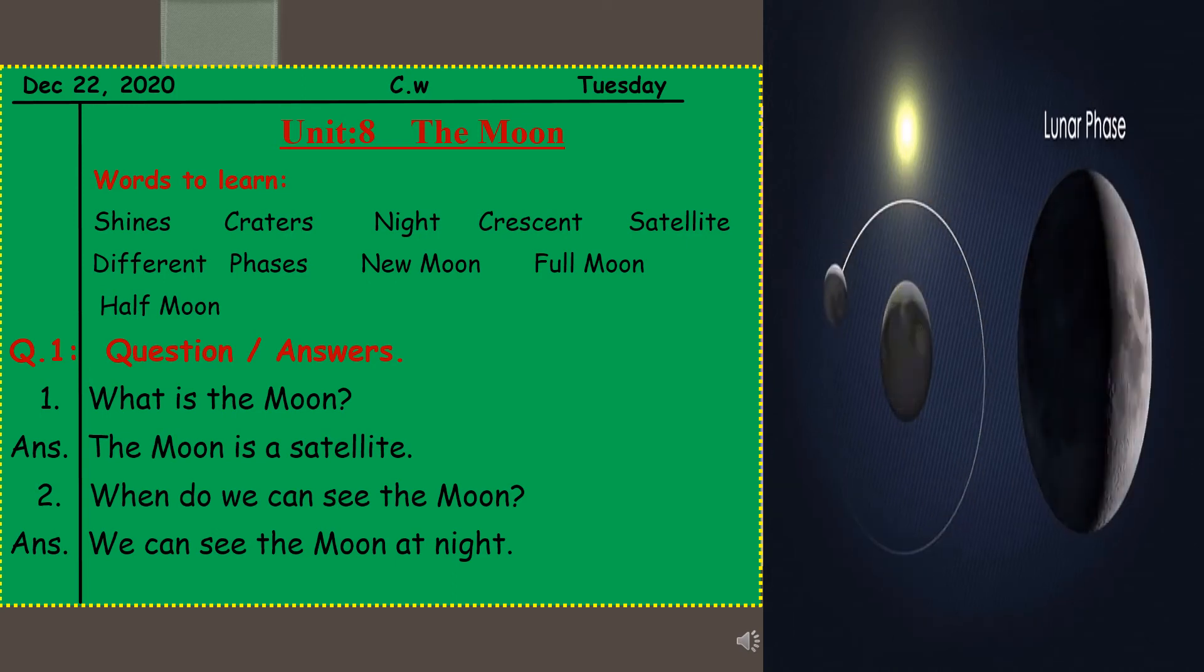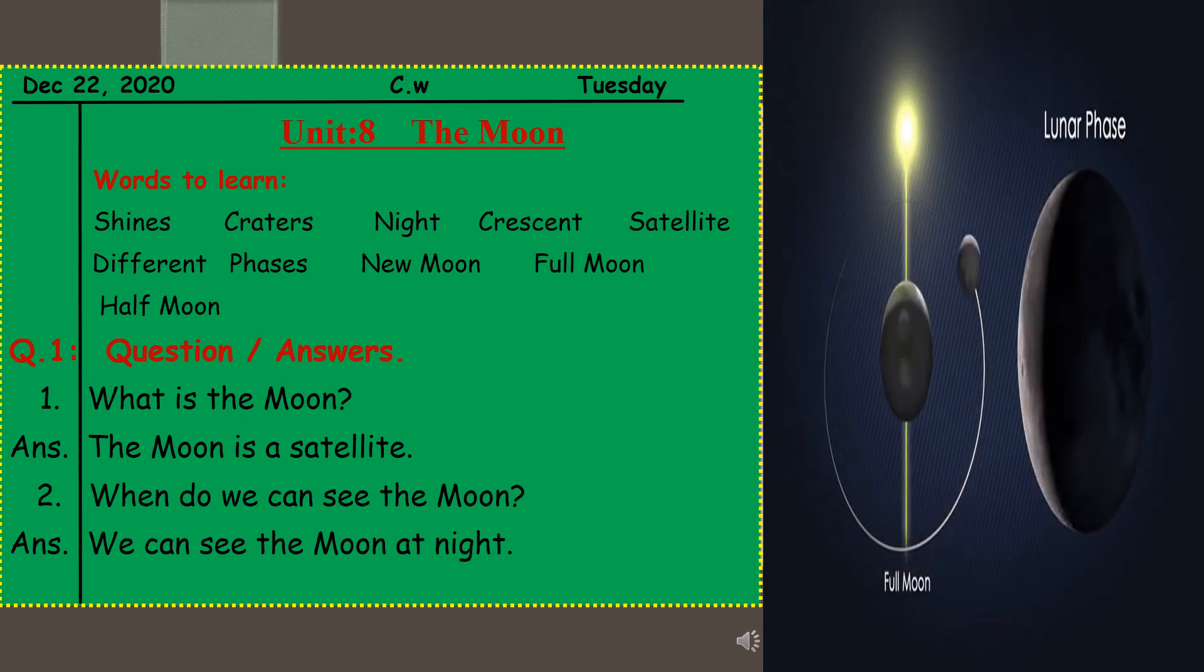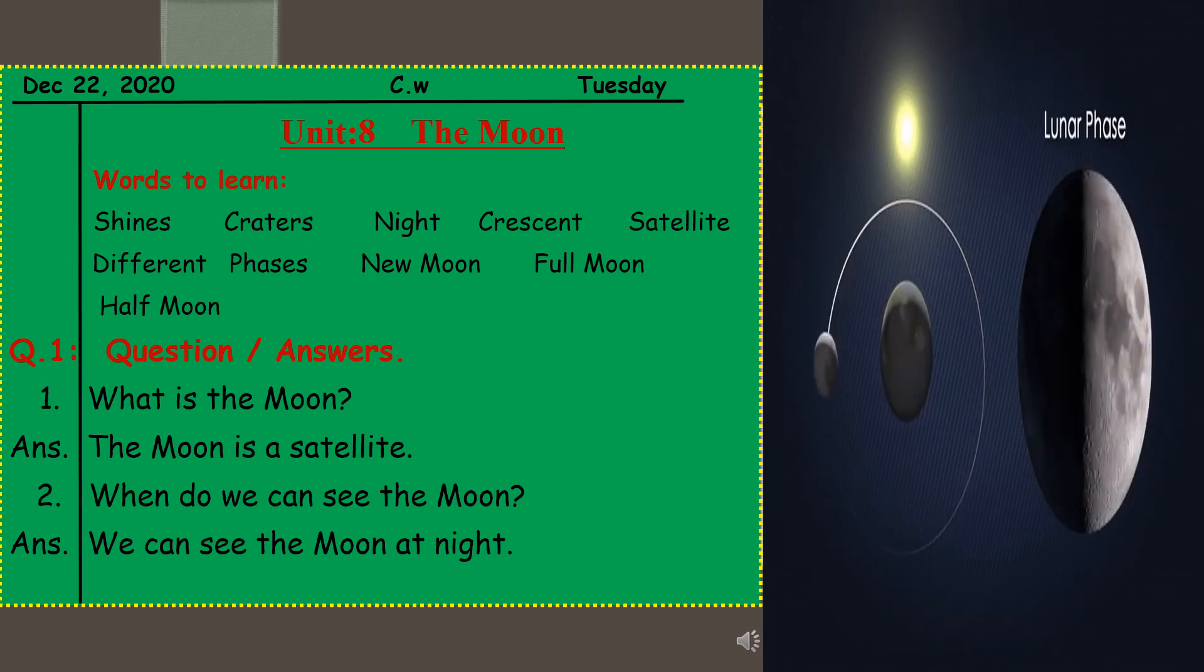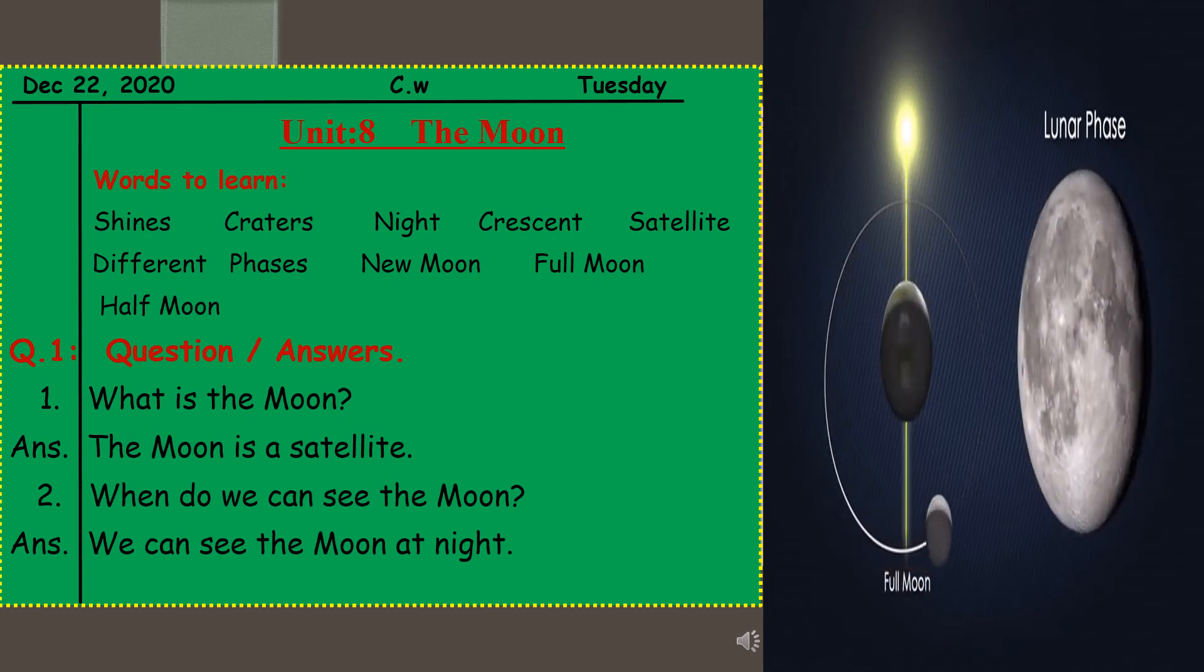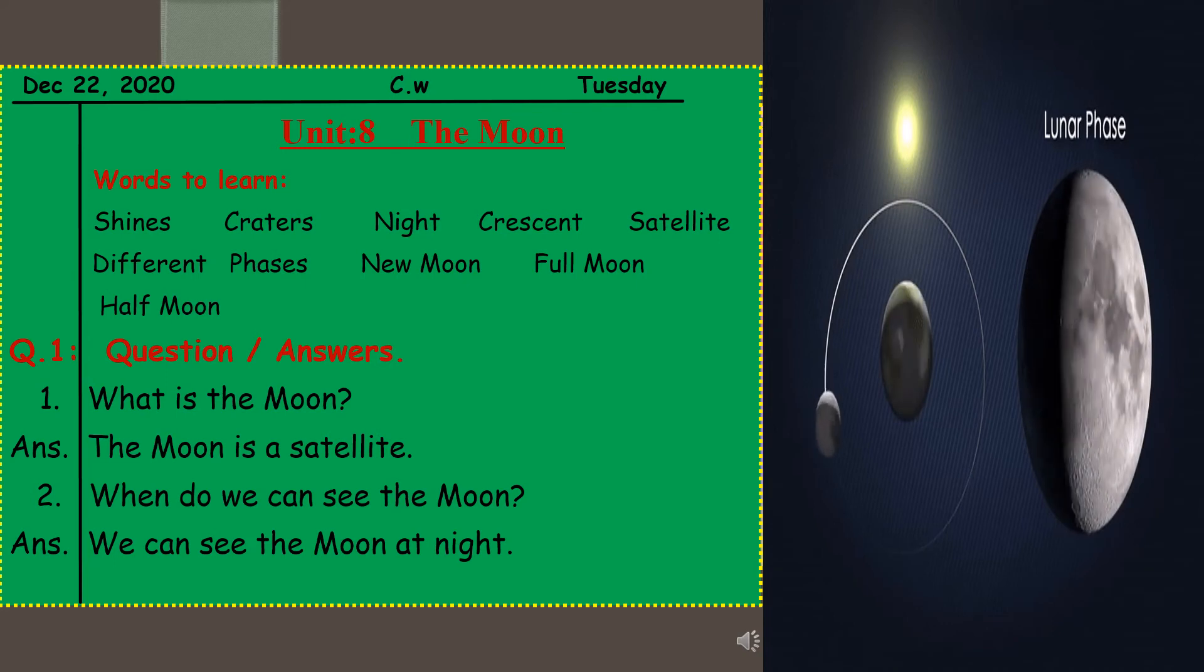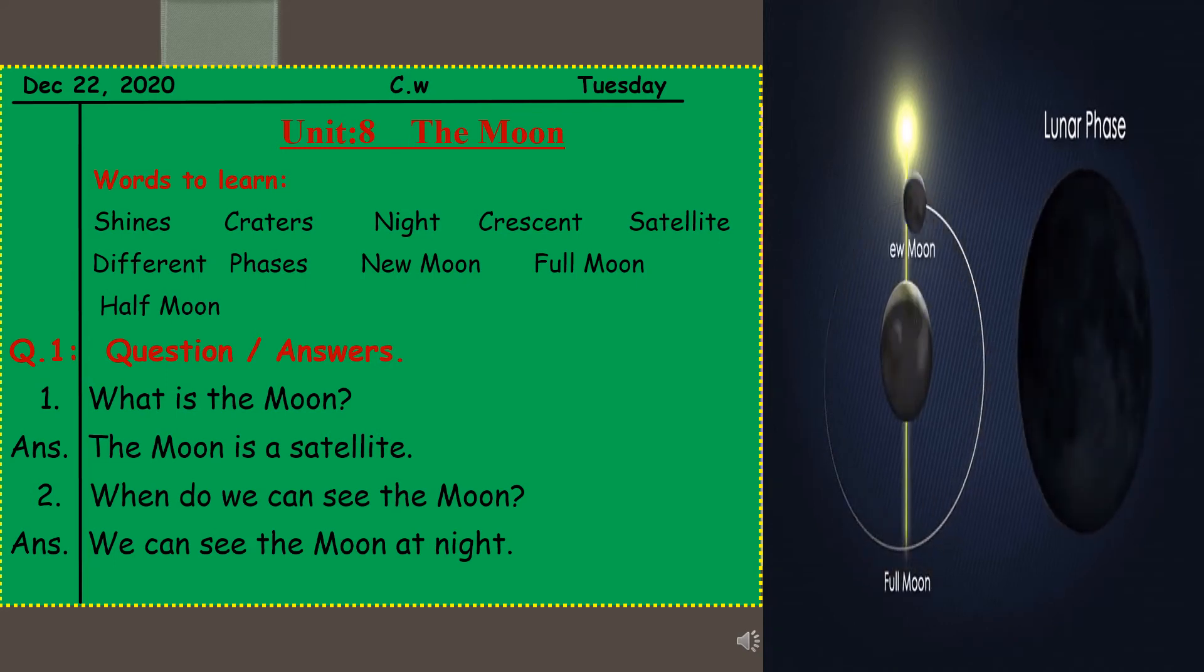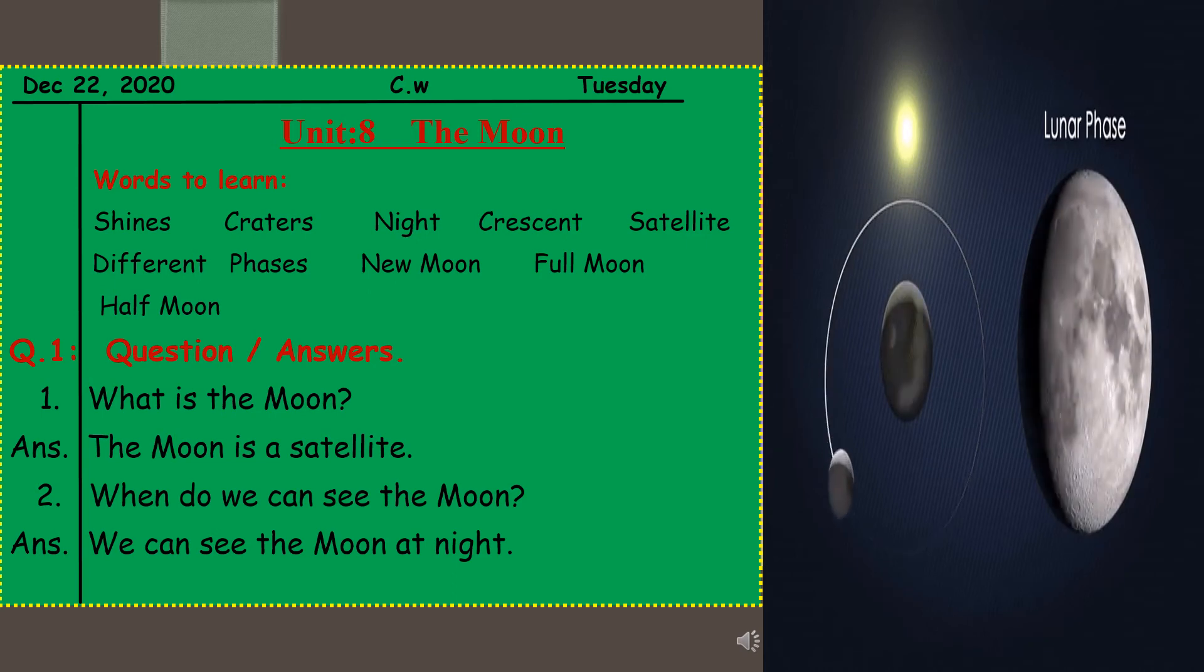Next word is half moon. When half of the moon is reflecting sunlight, you can see half white moon. H-A-L-F, half, M-O-O-N, moon. Half moon.